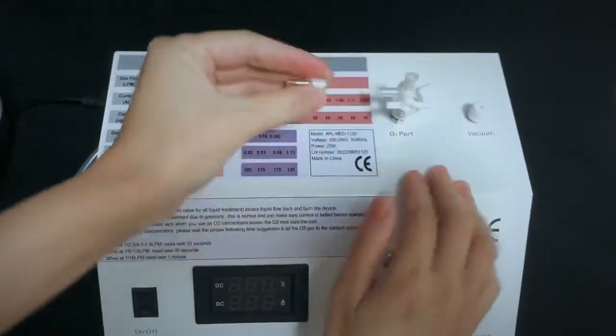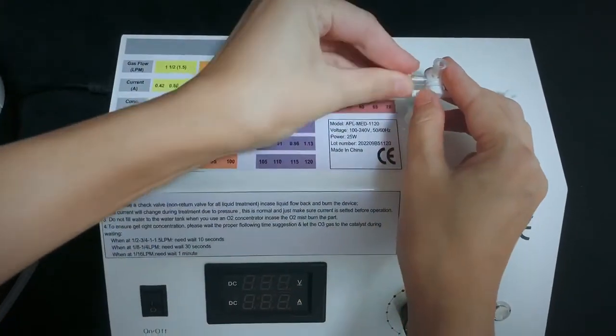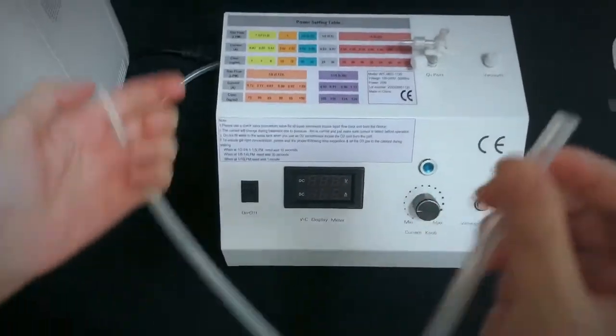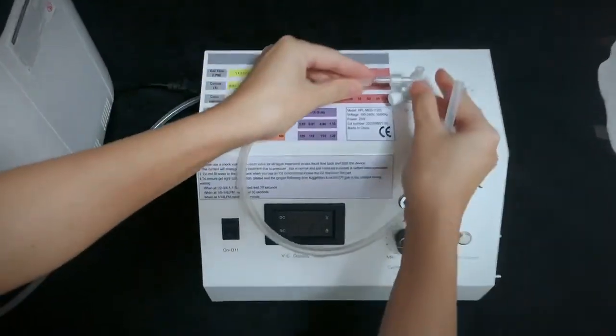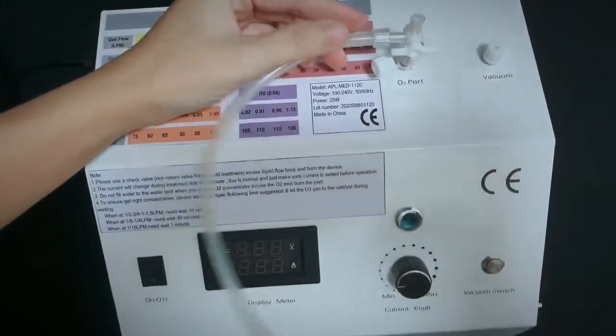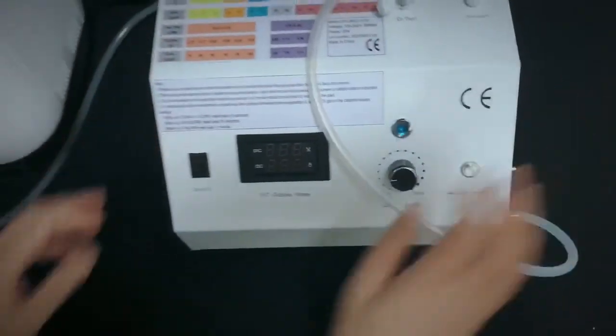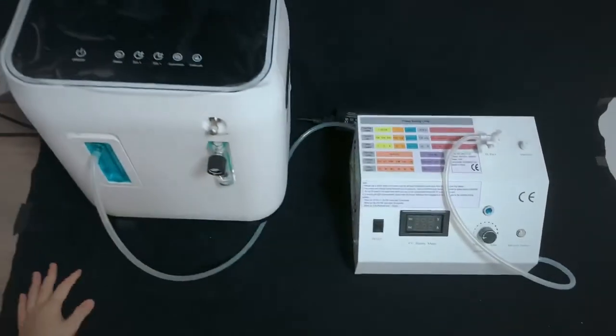Use a luer lock to connect to the left side, and another tube connect it to the ozone destructor port at the right side of the device.